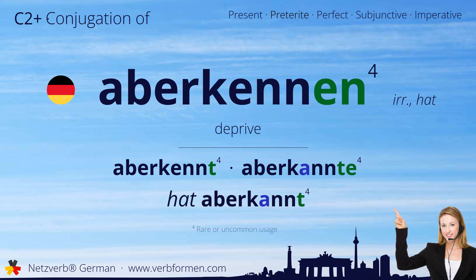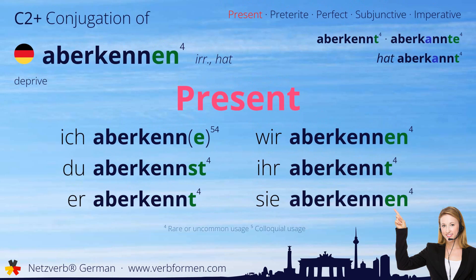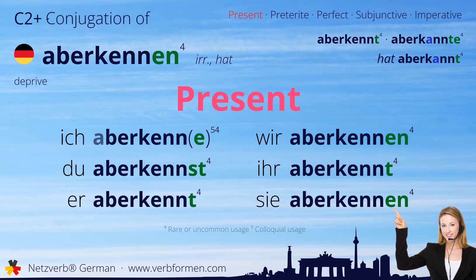Now let's move on to the tenses. First, we'll take a look at the present tense. Ich aberkenne, du aberkennst, er aberkennt, wir aberkennen, ihr aberkennt, sie aberkennen.